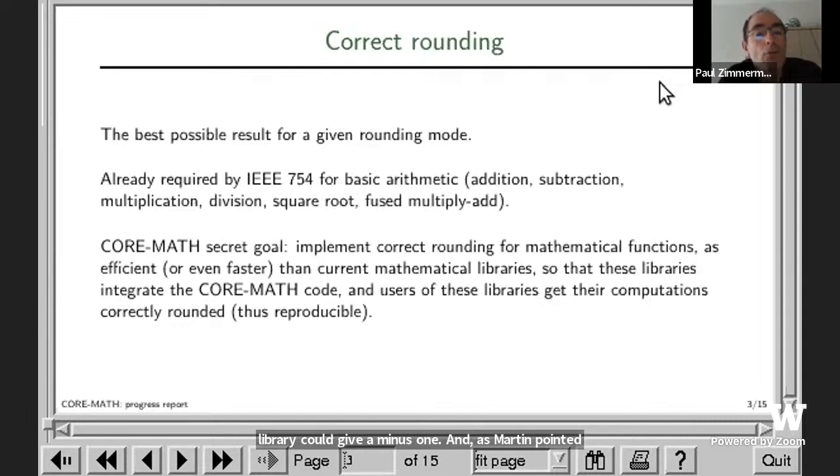So the goal of the project is really to push the current IEEE standard and also the C standard to require correct rounding for mathematical functions. And so, as in the LLVM libc project, we don't only target the default rounding mode which would round to nearest, but also the directed rounding modes to zero, to plus or minus infinity. And this, for example, is useful for people doing interval arithmetic.